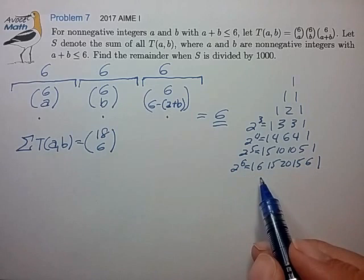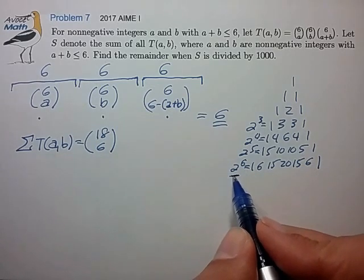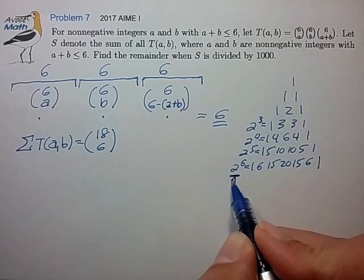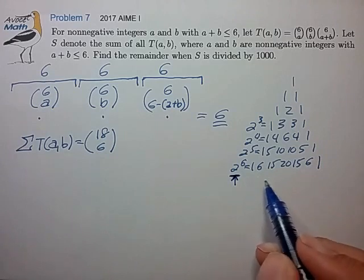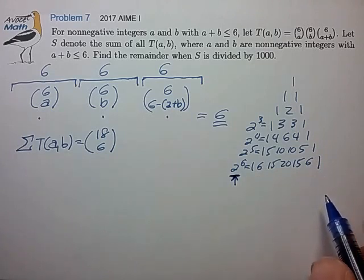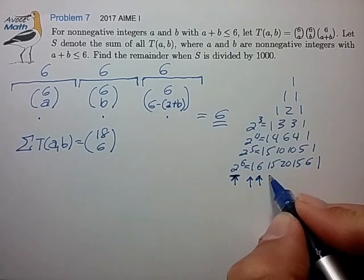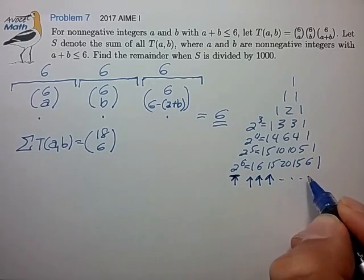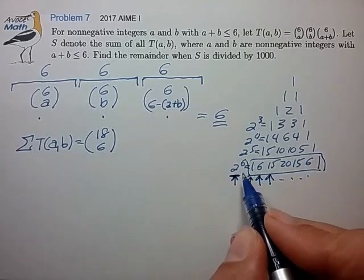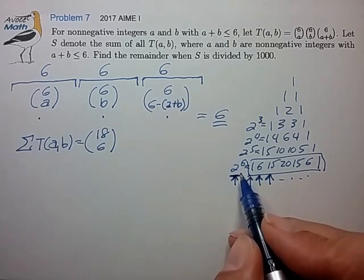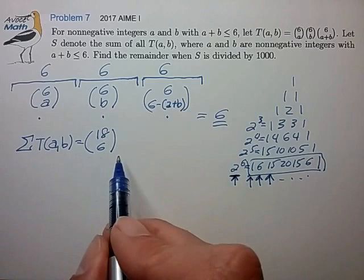And the way you can convince yourself of that is to do a combinations calculation in two ways. You can calculate all possible subsets of, say, six elements by doing a binary argument to get to the two to the sixth. And you can also calculate the total number of subsets of six elements by computing the total number of subsets of zero elements, the total number of subsets of one element, the total number of subsets of two elements, and so on, and taking that sum.